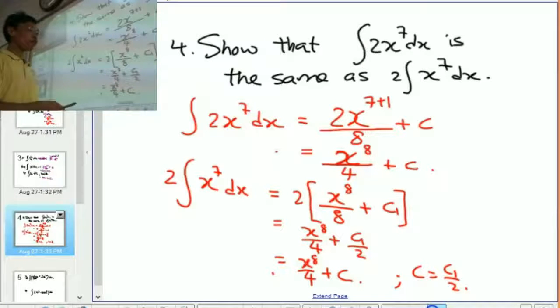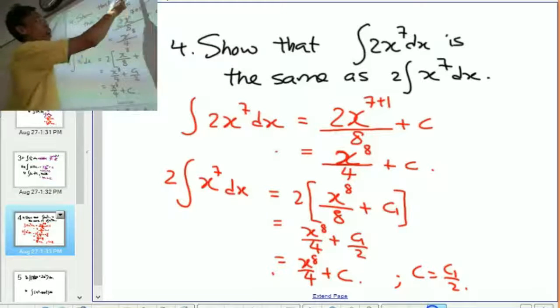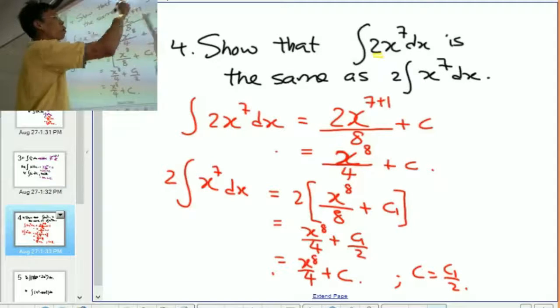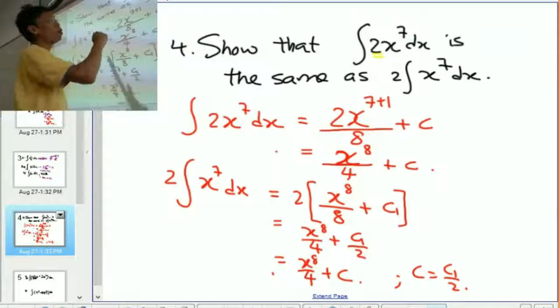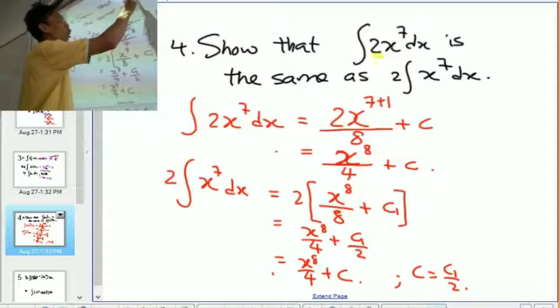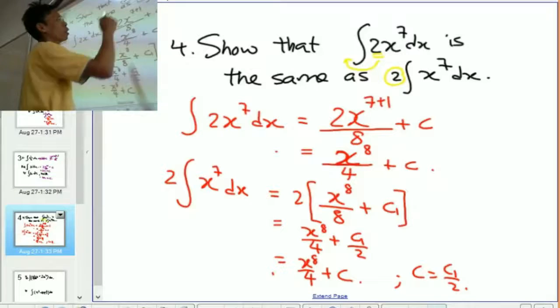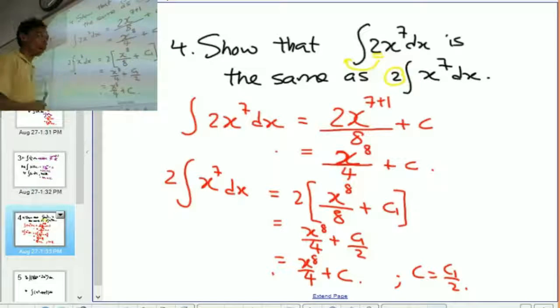In fact, now you can form a generalization. That is, when you have a function times a multiple, a constant multiple, the constant multiple can come out of the integration sign to become like this. It can come out of the integration sign.